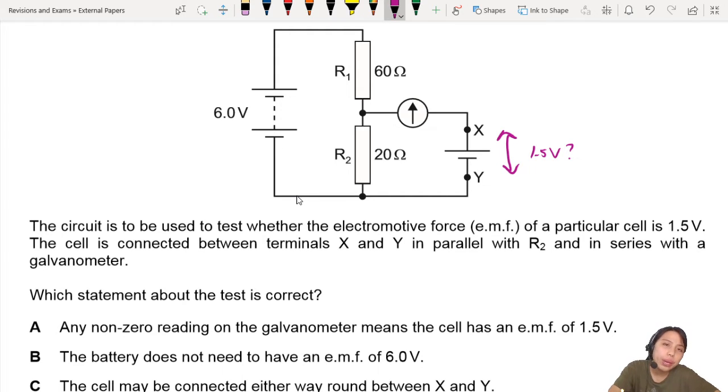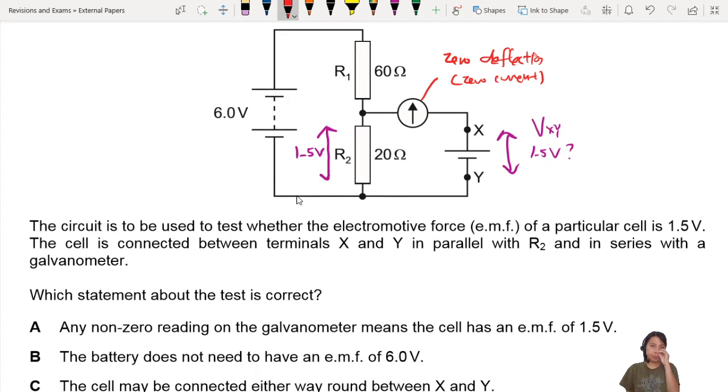When you have a circuit to test whether it's 1.5 volts or not, that means the potential difference across here is 1.5 volts. If this matches the potential difference VXY across the battery, if they're the same, that means this will have zero deflection, zero current. That's how you can use this circuit to detect.